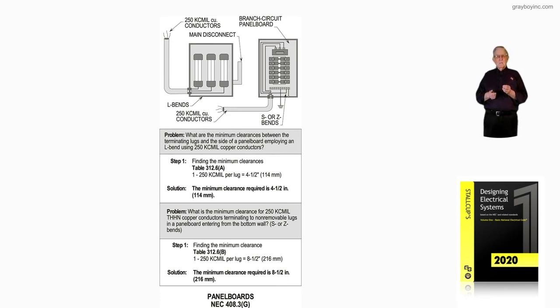Using the same size conductor, 250 KC mill per lug, eight and a half inches is required from the termination of the lug down to the bottom of the enclosure.